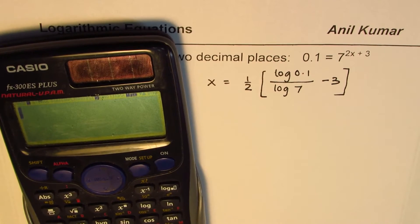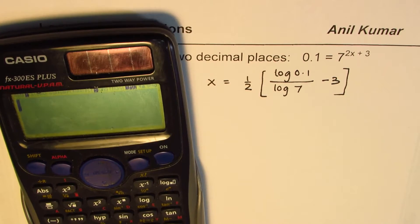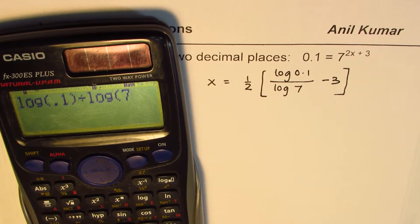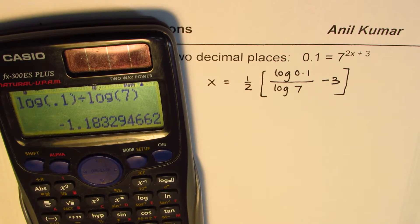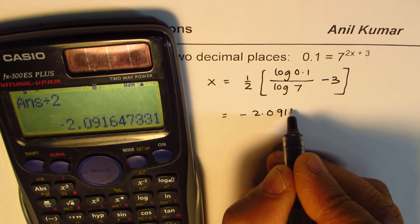So let me do it in small steps. We'll start from inside. So we have log(0.1)/log(7) equals to... And then from here, we are going to subtract 3, then divide by 2. So we get our answer, which is equal to -2.0916.